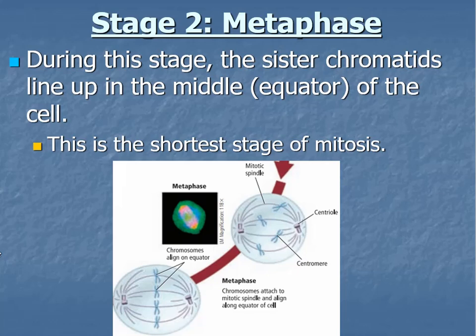Metaphase is technically two individual stages — there's a pro-metaphase and then an actual metaphase, but you don't need to have that part memorized. During this stage, the sister chromatids will line up on the midline or equator of the cell. Getting them to that midline and ensuring they are attached to the spindles is actually a two-part stage — pro-metaphase and then metaphase. It's the easiest one to spot because everything is lined up in the middle.